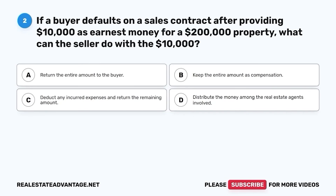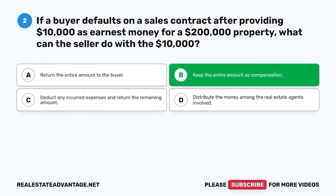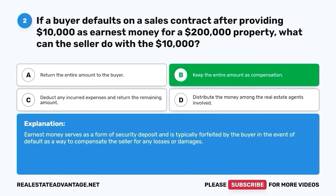Question 2. If a buyer defaults on a sales contract after providing $10,000 as earnest money for a $200,000 property, what can the seller do with the $10,000? A. Return the entire amount to the buyer. B. Keep the entire amount as compensation. C. Deduct any incurred expenses and return the remaining amount. D. Distribute the money among the real estate agents involved. The correct answer is B. Keep the entire amount as compensation. Earnest money serves as a form of security deposit and is typically forfeited by the buyer in the event of default as a way to compensate the seller for any losses or damages.